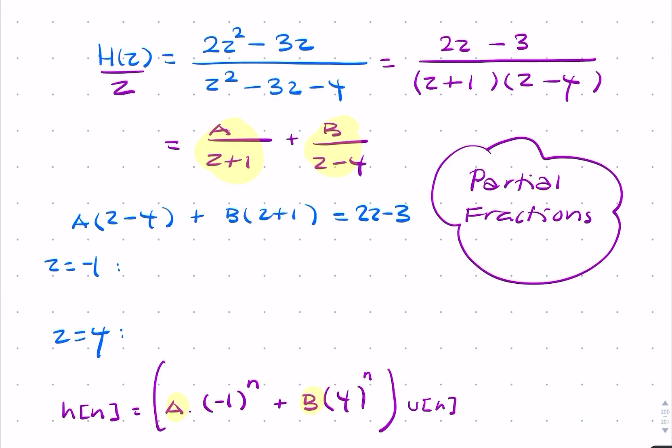So if z equals minus 1, you simply substitute minus 1 here and here. That gives us A times negative 5, so A equals 1.